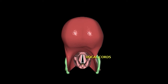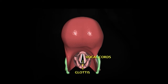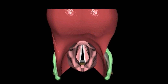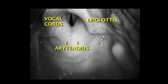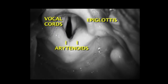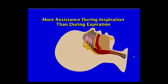The vocal cords are ligaments that project forward from the arytenoid cartilages to the inside of the thyroid cartilage. The opening to the trachea, called the glottis, lies between them. All the cartilages, ligaments, and muscles are covered by mucosa. Because of the structure of the larynx, at any given glottic opening, there is more resistance to inspiration than to expiration.